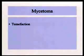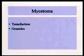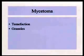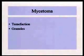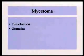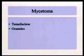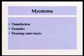Mycetoma means tumor — tumefaction. It produces granules. We saw mycetoma with Streptomyces, which are bacterial, and this is similar in that we get granule formation. Each species produces its own specific granule with different colors — some white, red, black, yellow — and the walls may be rough or smooth. All of these characteristics are used to identify species. They almost always form draining sinus tracts.